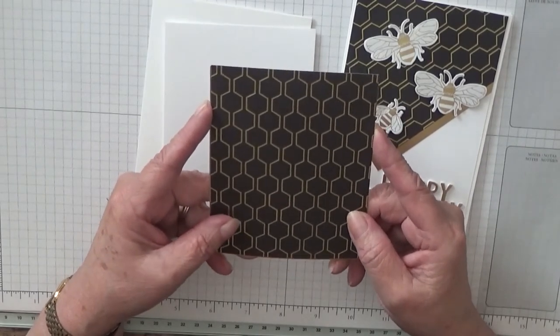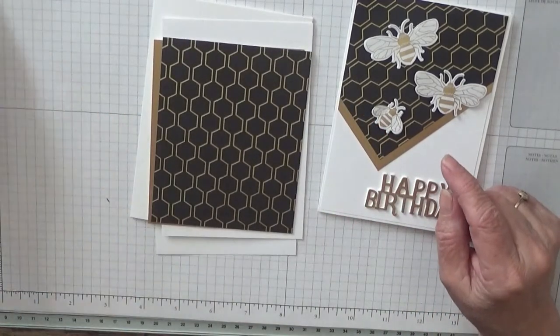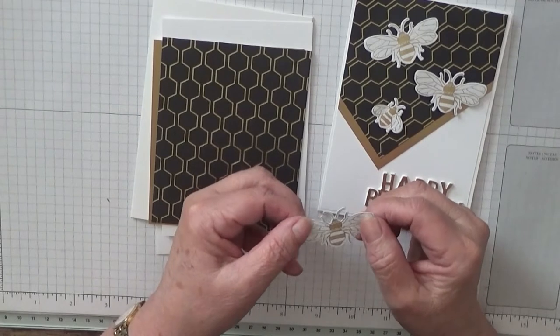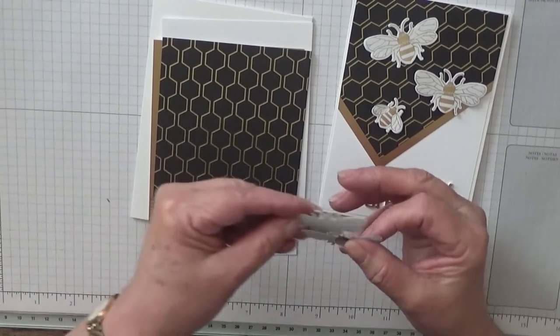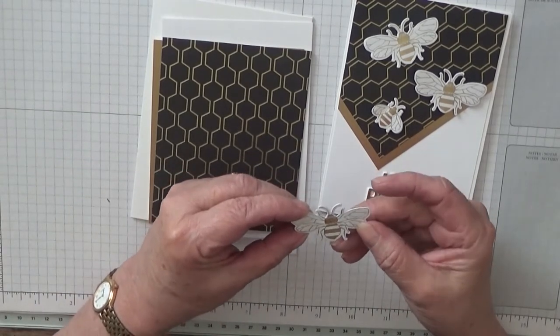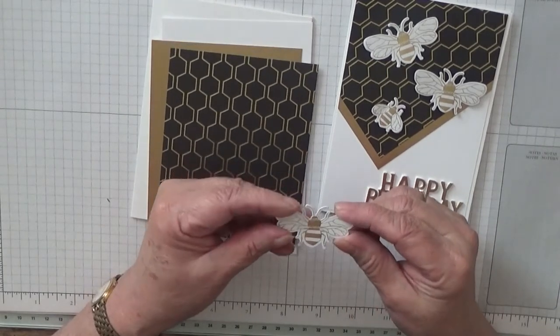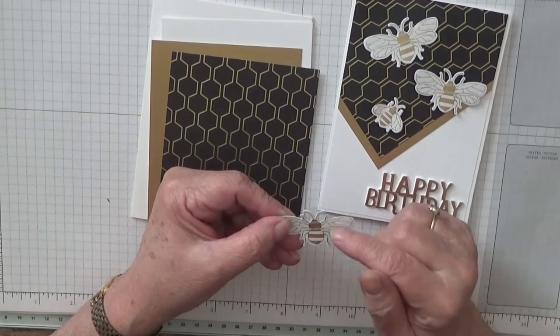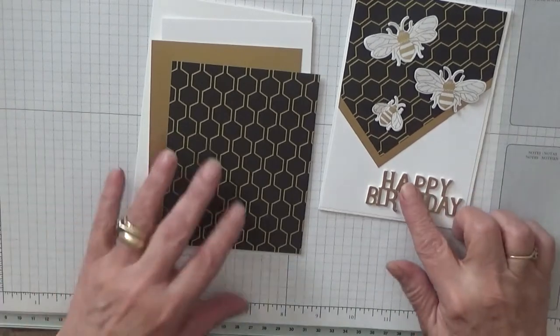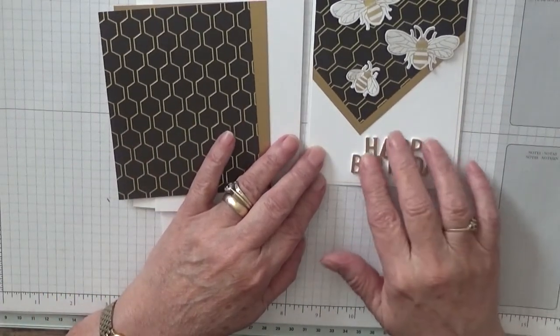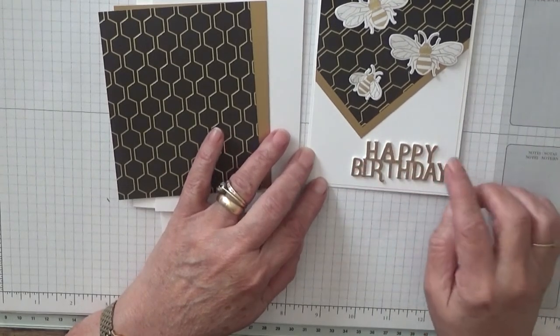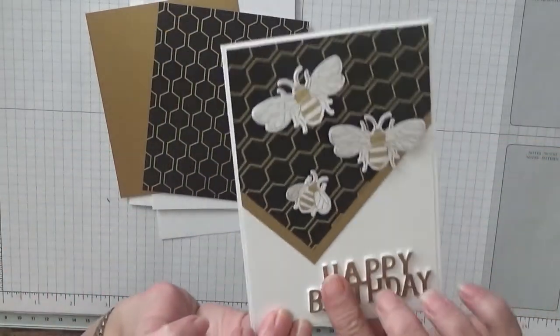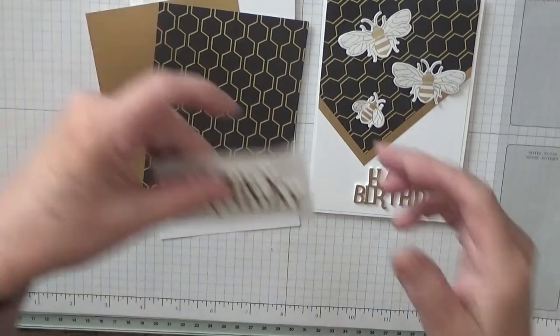I cut out the bees by hand, which are quite easy to cut out. There are dies to go with this set which I'm getting, so you don't have to cut them by hand. For the happy birthday, I used a Spellbinders die in gold. I cut out five white ones and a gold one, and I stuck them all together. You can see how thick they are.